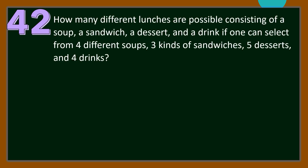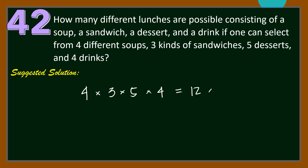Number 42. How many different lunches are possible consisting of a soup, a sandwich, a dessert, and a drink, if one can select from 4 different soups, 3 kinds of sandwiches, 5 desserts, and 4 drinks? For our solution, we are going to use the fundamental counting principle. By the multiplication principle, we multiply 4 times 3 times 5 times 4. That is 12 times 20, which equals 240 different lunches possible.